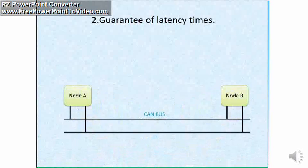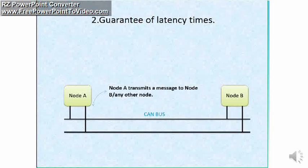So the next property of CAN is guarantee of latency time. The guarantee of latency time means the time taken for transmitting a message and receiving an acknowledgement for the same. Let's see with an illustration how exactly it will happen in our CAN network. Suppose I have two nodes in my CAN network. Node A acts as a transmitter and node B acts as a receiver.